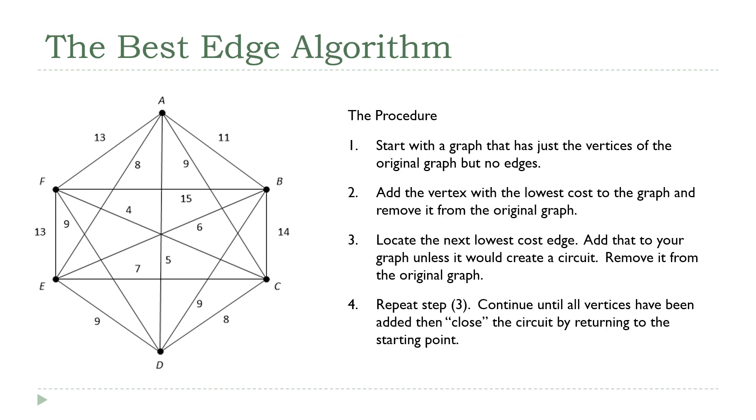The best edge method does have some similarities to the nearest neighbor method in that it's iterative, where we're going to do these steps over and over again until we finally end up with the circuit that we're looking for. The way this method works is you're going to start by looking at the graph, picking out the absolute cheapest edge, the one with the absolute lowest cost, and you're going to add that one to the solution. Then remove it from the original graph, and then we repeat this over and over again. Now we look for the next cheapest, add that to our solution, next cheapest, and so on.